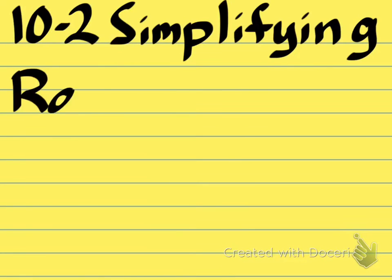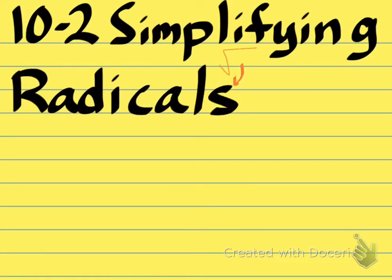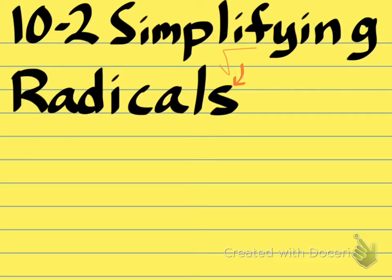Hey guys, so this video is going to cover 10-2 simplifying radicals. There's a lot that we're going to be covering, so this is a video that is probably meant to be paused and re-watched again and again. The first thing you need to remember is that the word radical defines the radical sign. The square root sign is also called the radical symbol, and I will be using the word radical throughout this video.